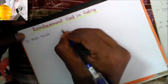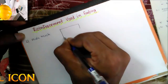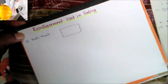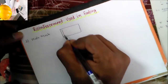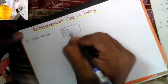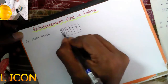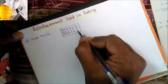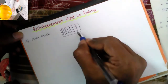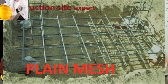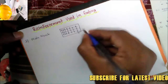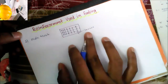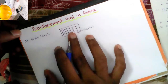Suppose this is the size of the footing. You provide the reinforcement bar in this direction and in this direction — we call it a plain mesh. The outer part is the clear cover. The minimum clear cover provided in mesh is 40 mm.